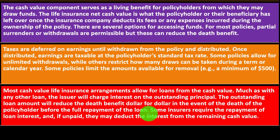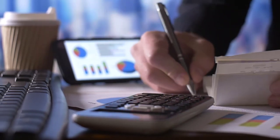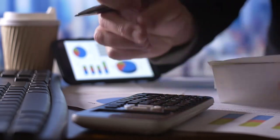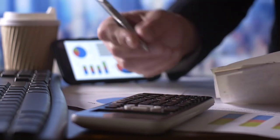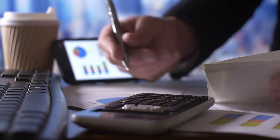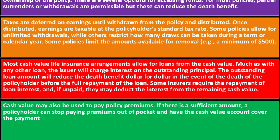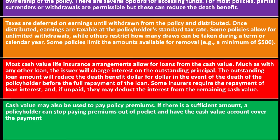Taking a loan against the cash value uses it as collateral on the loan. The downside is you'll be paying interest. Some insurers require repayment of loan interest, and if unpaid, they may deduct the interest from the remaining cash value. Cash value may also be used to pay policy premiums — if there is a sufficient amount, a policyholder can stop paying premiums out of pocket and have the cash value account cover the payments.